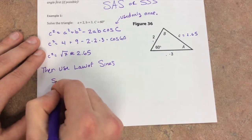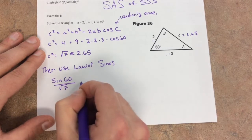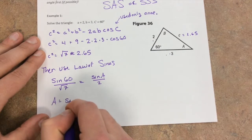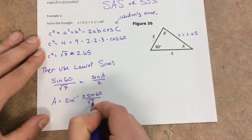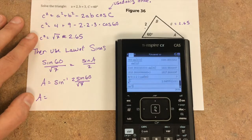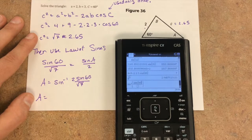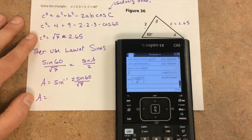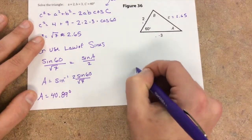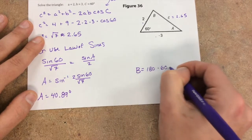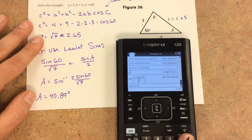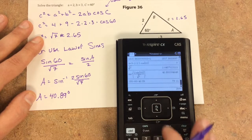We can say sine 60 over square root 7, I'll be exact, equals sine A over 2. So A equals inverse sine of 2 sine 60 over square root 7. Inverse sine of 2 sine 60 divided by the square root 7, we get 40.89 degrees. That means B has to be 180 minus 60 minus 40.89. B would be 79.11 degrees.